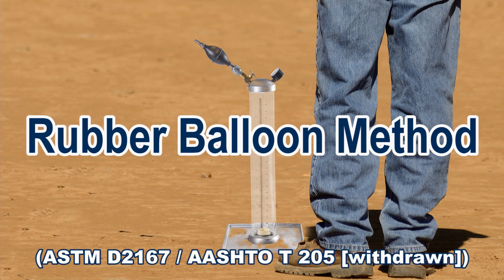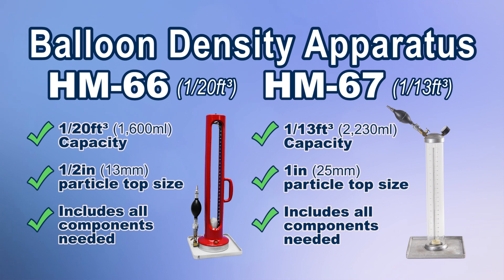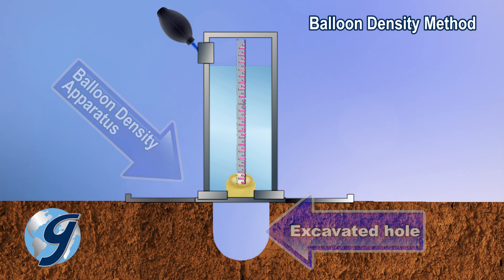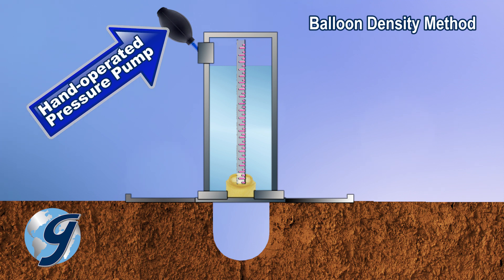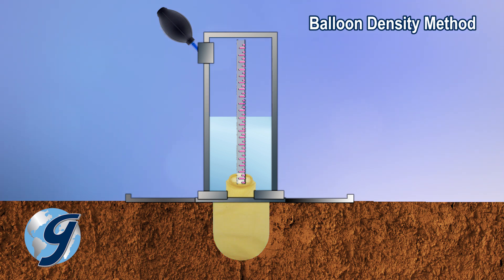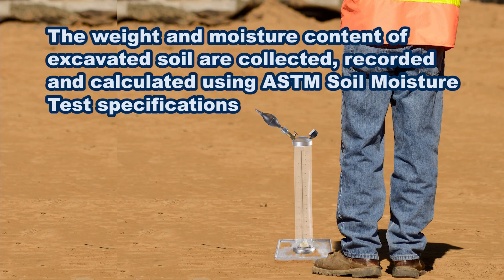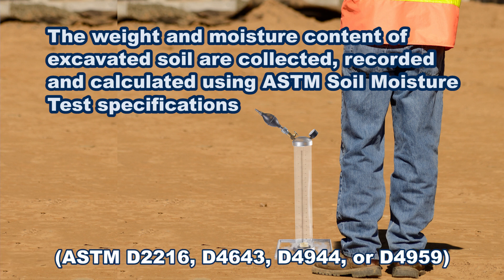With the rubber balloon test method, an on-site hole is excavated with the soil carefully collected and set aside. A balloon density apparatus, like the Gilson HM-66 or HM-67 Balloon Density Apparatus, is positioned over the hole. But instead of using sand to measure volume, the calibrated vessel is pressurized, forcing the rubber membrane into the hole. Graduations on the vessel are read to determine hole volume. The weight and moisture content of the excavated soil is recorded and calculated using ASTM soil moisture test specifications.